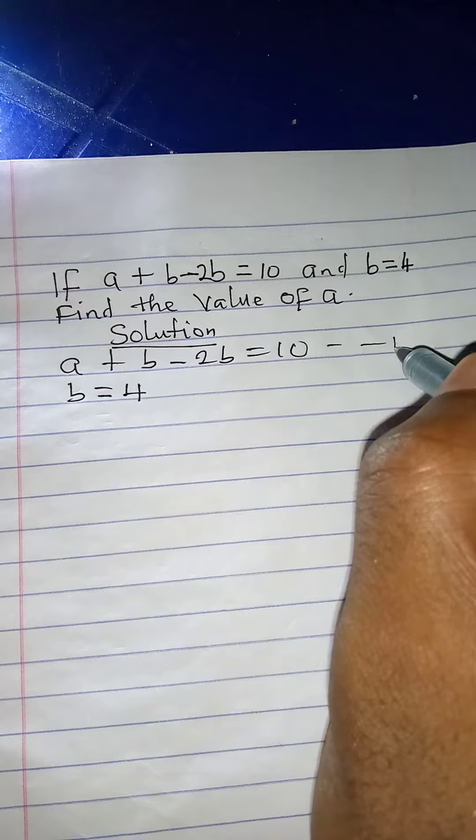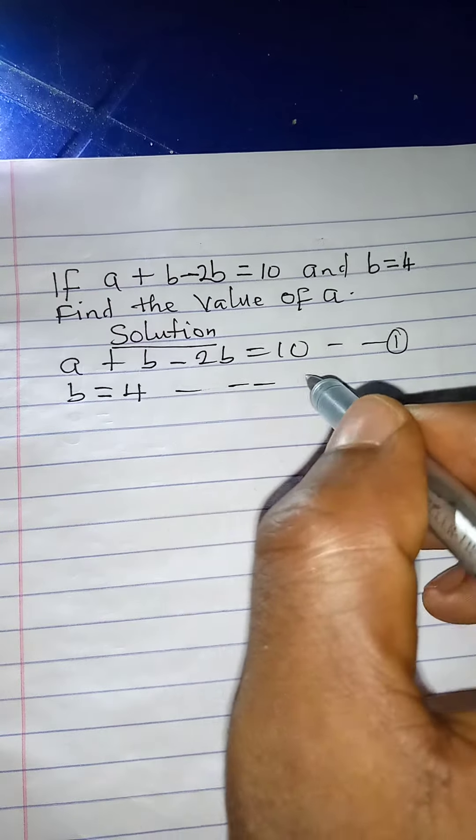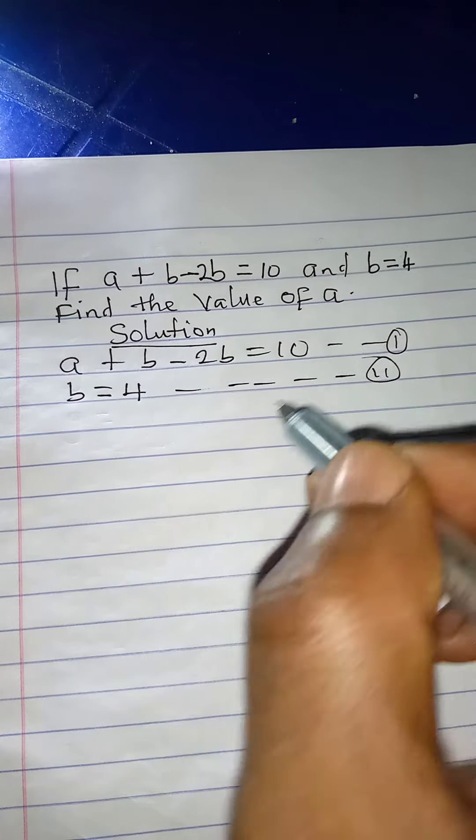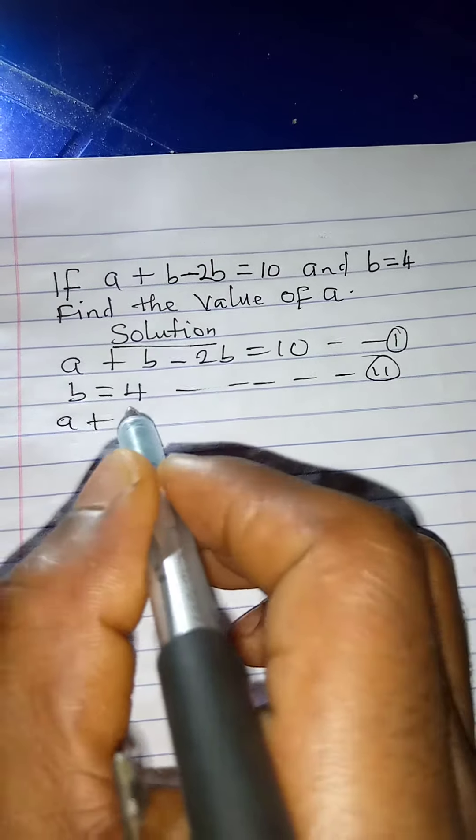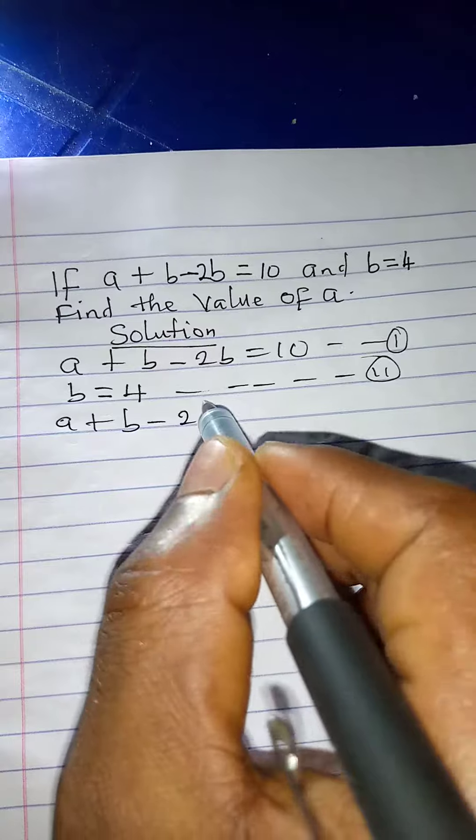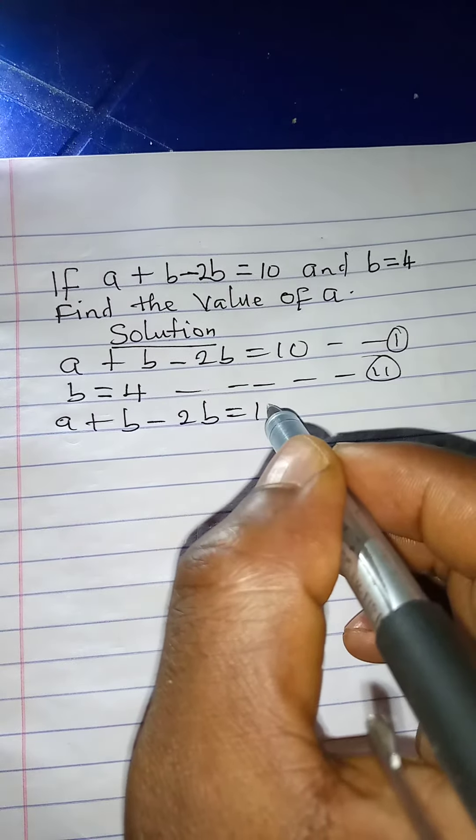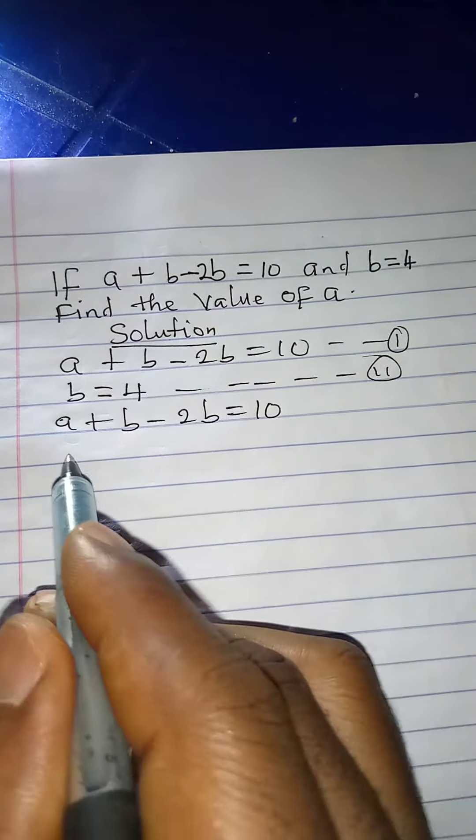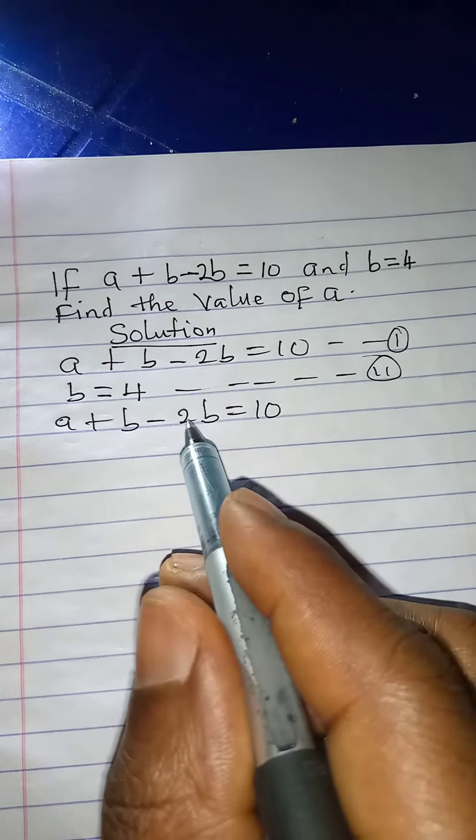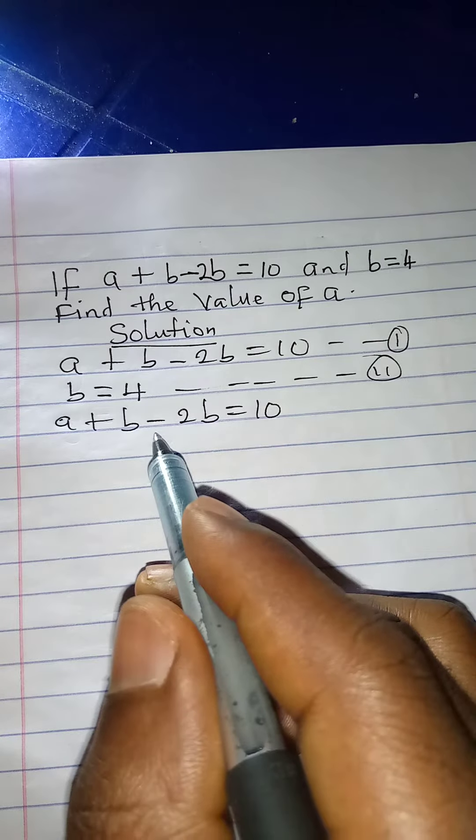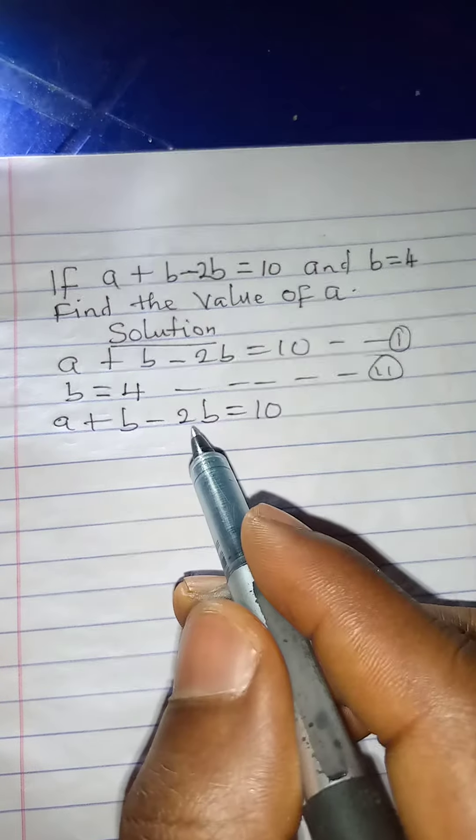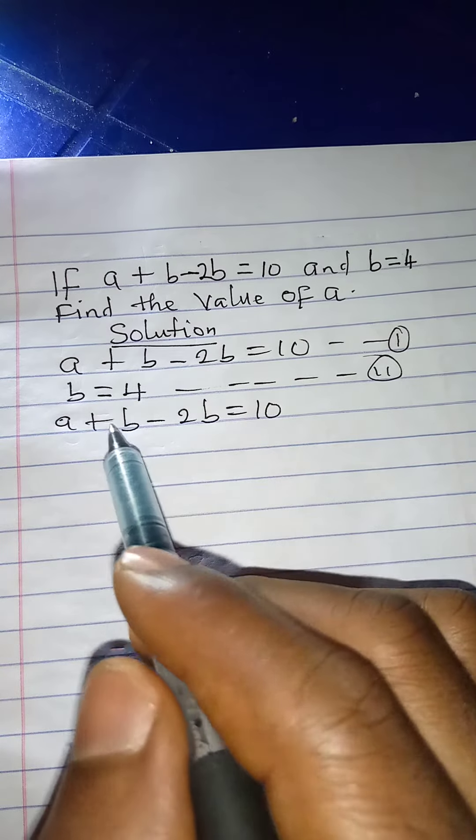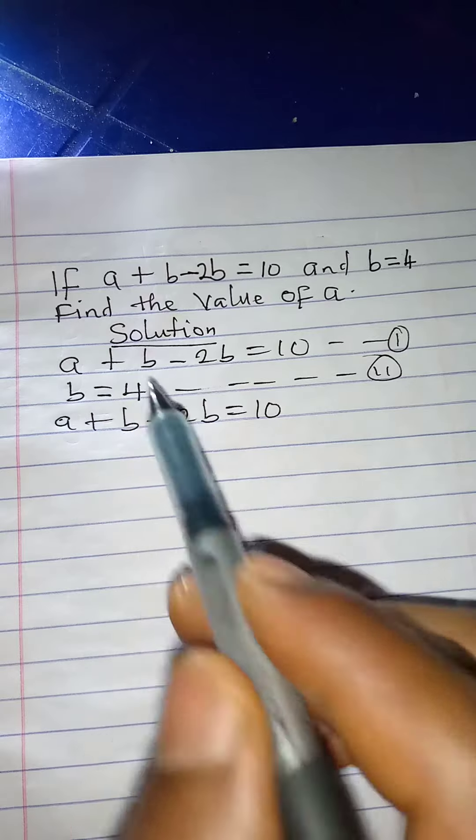Since b is equal to 4, substitute into equation 1. Let me call this equation 1 and call this equation 2. So equation 1 is a plus b minus 2b equals 10. In this equation we have 2 unknowns, so we can't solve for it unless we replace one of these unknowns with a number, just like we have b equal to 4.